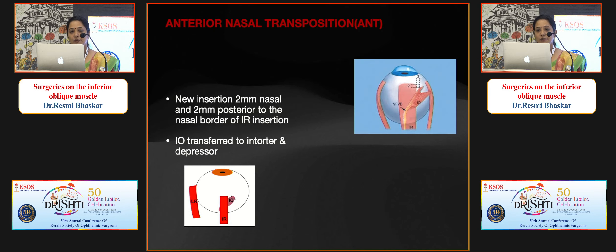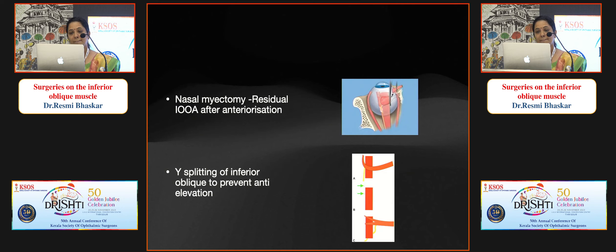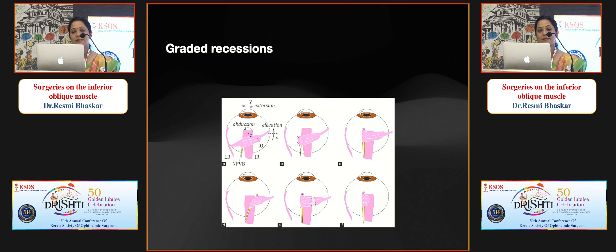In anterior nasal transposition, the new insertion is placed 2 mm nasal and posterior to the nasal border of the inferior rectus, converting the inferior oblique from an extorter to an intorter and depressor. Anterior nasal transposition is indicated in bilateral fourth nerve palsy and over-elevation with severe cyclotorsion, such as in cranial disorders. Its advantage is that it avoids anti-elevation syndrome. In nasal myectomy for residual inferior oblique overaction after anteriorization, the nasal part of the inferior oblique is cut. Y-splitting places the posterior limb posteriorly to prevent anti-elevation.